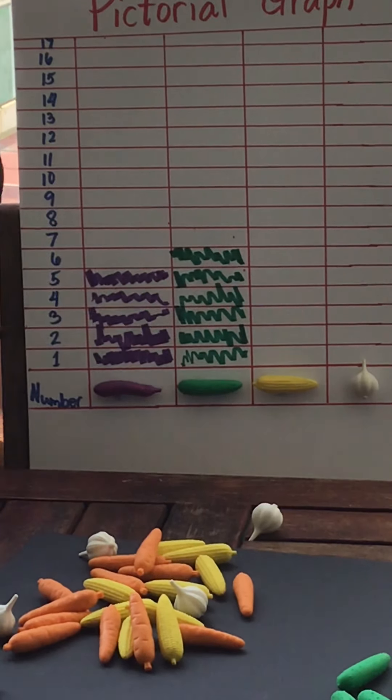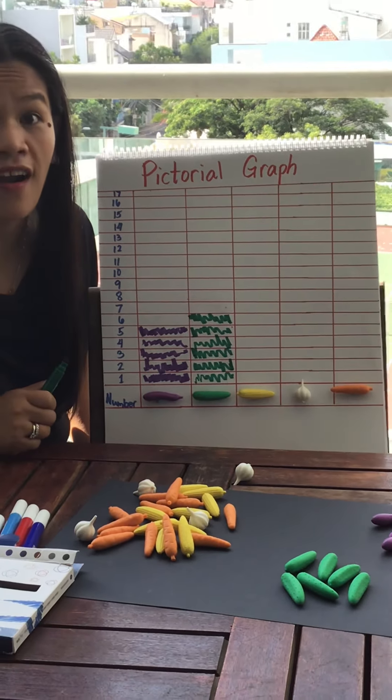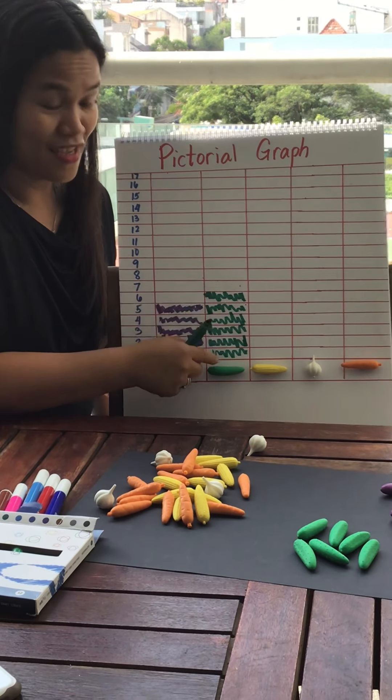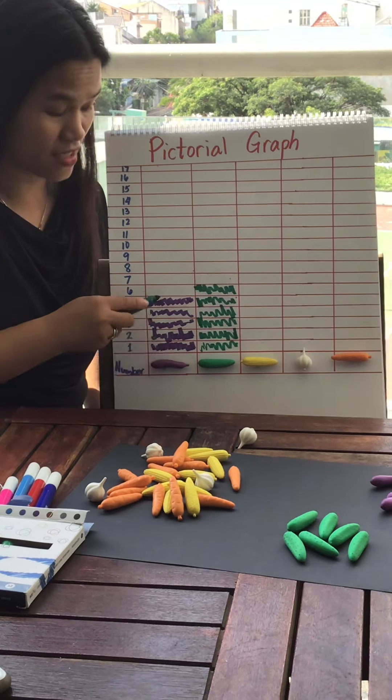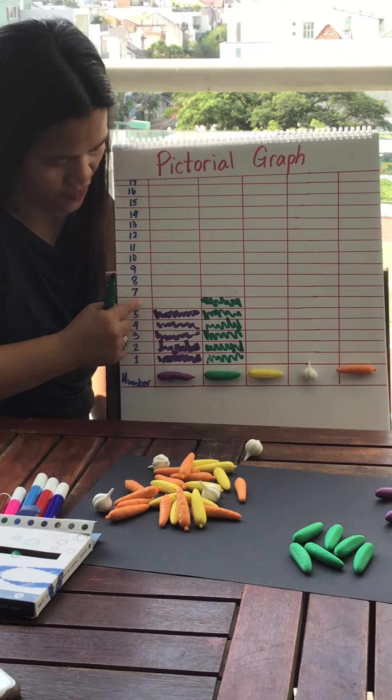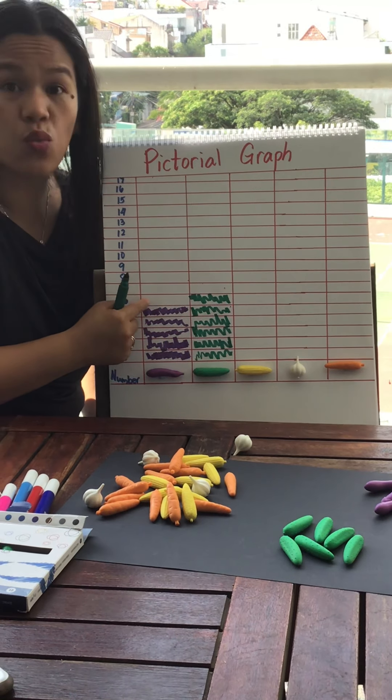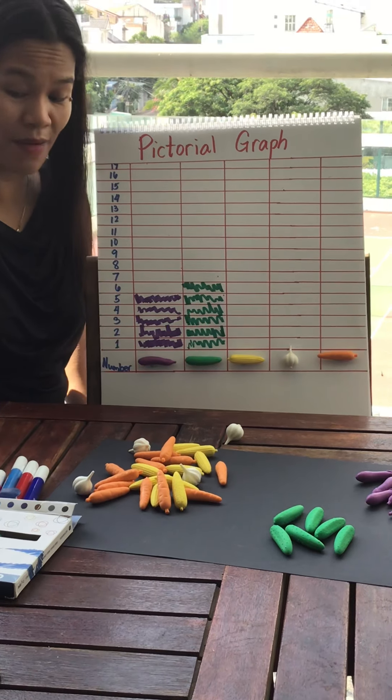Now you can see which one has more. It's the cucumber has more. How many more than the eggplant? One more. That's right, because this one's five, that's six. So there's one more cucumber than the eggplant.